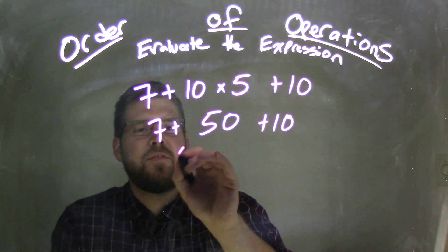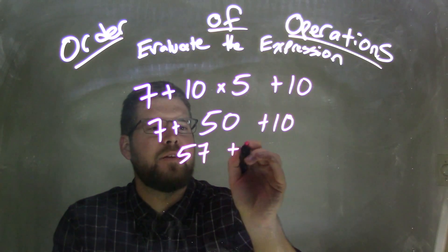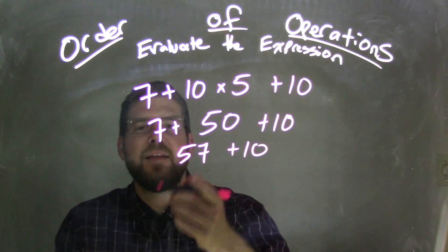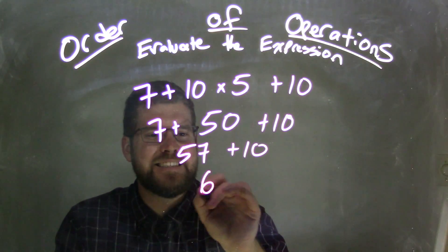7 plus 50 is 57 plus 10. Bring down that 10. And lastly, 57 plus 10 is 67.